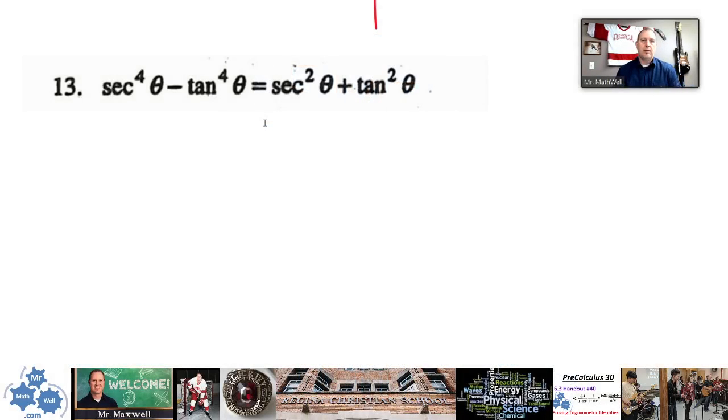Okay, so in this proof, what we want to notice here is that we have a secant to the fourth minus tan to the fourth.